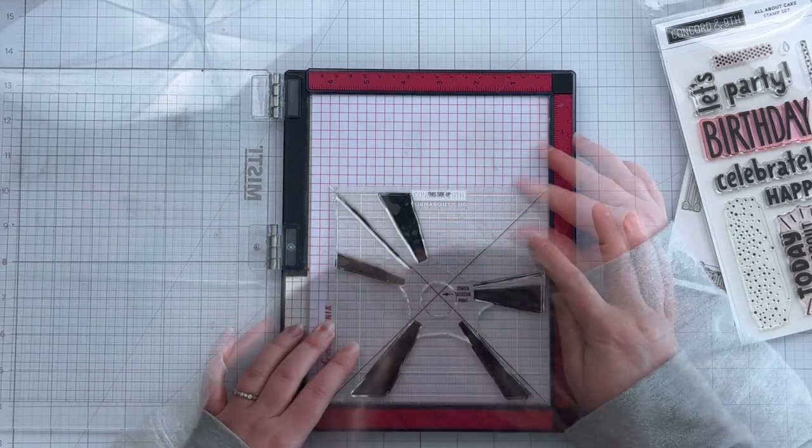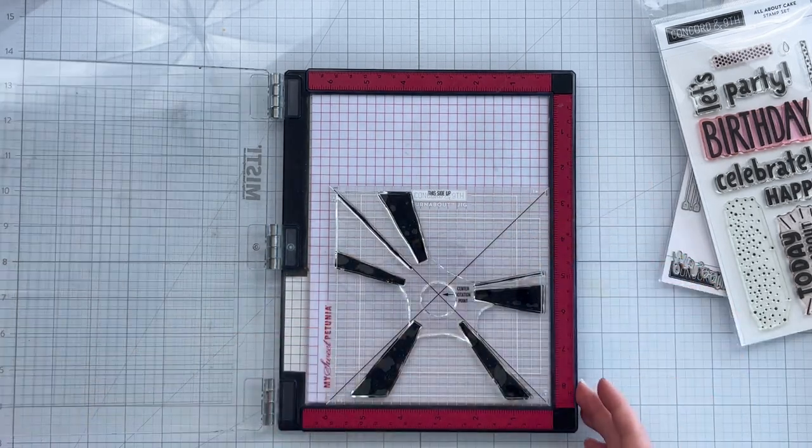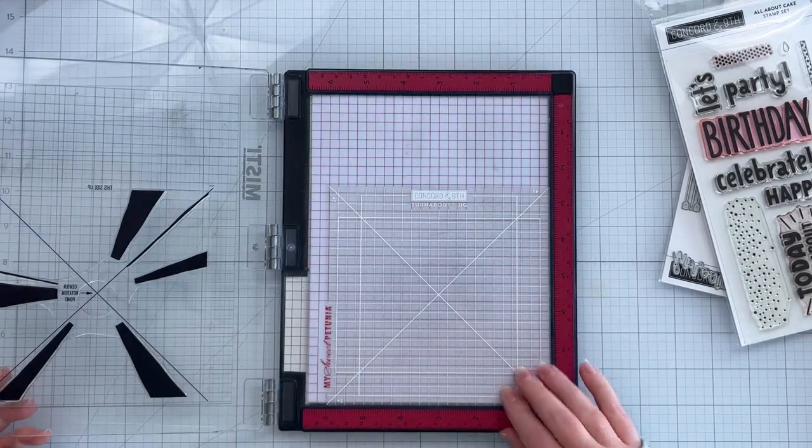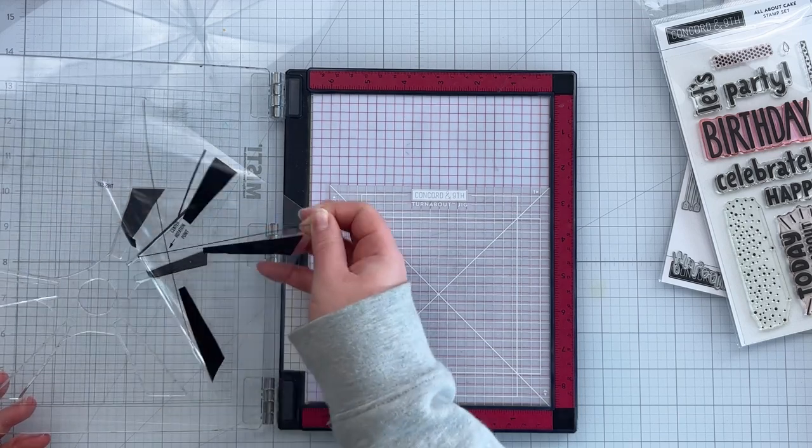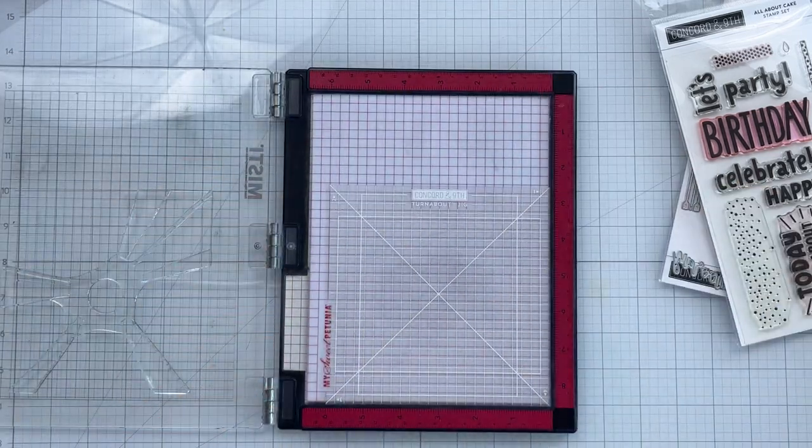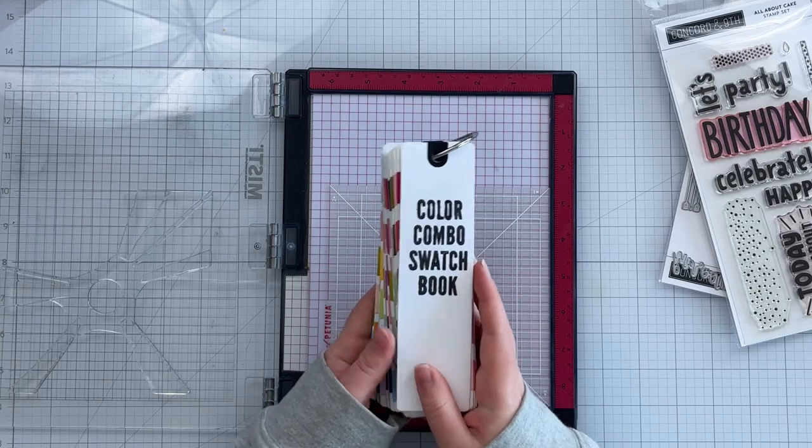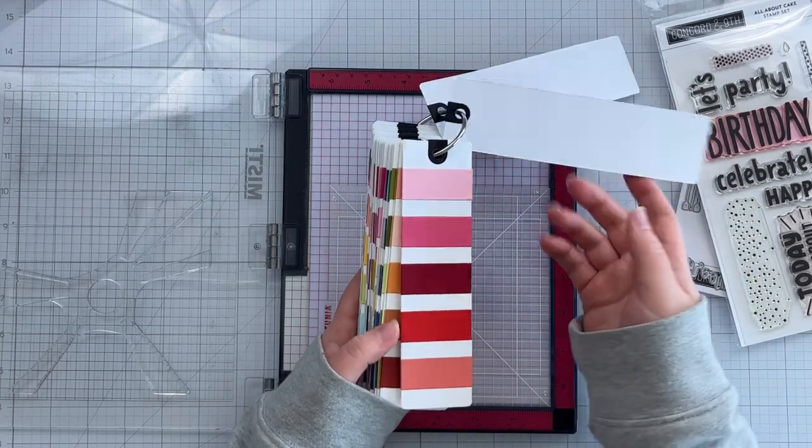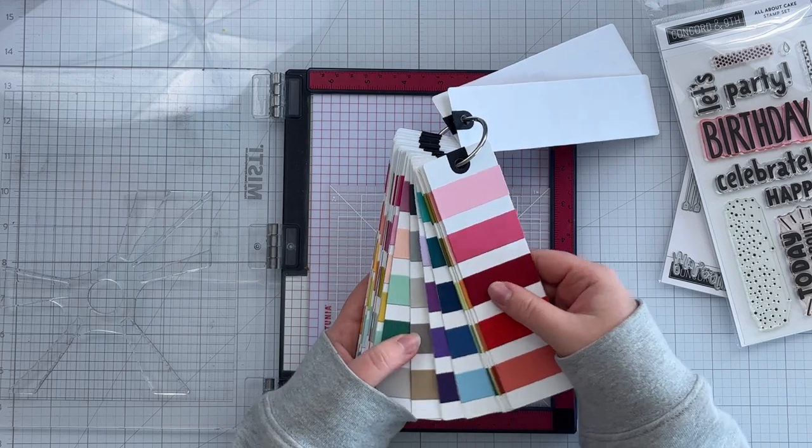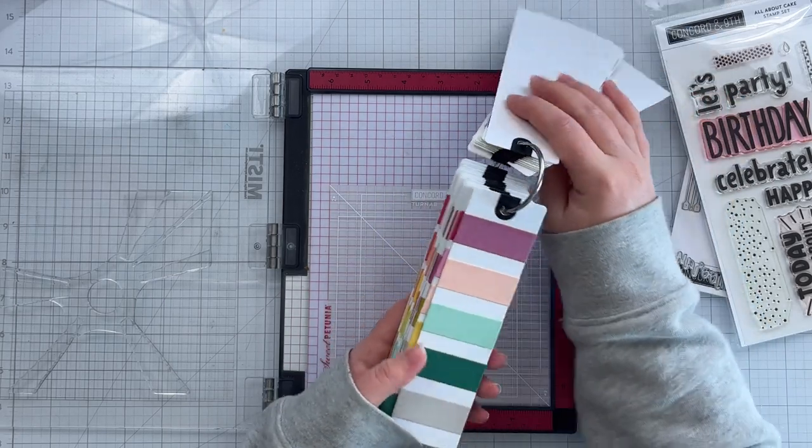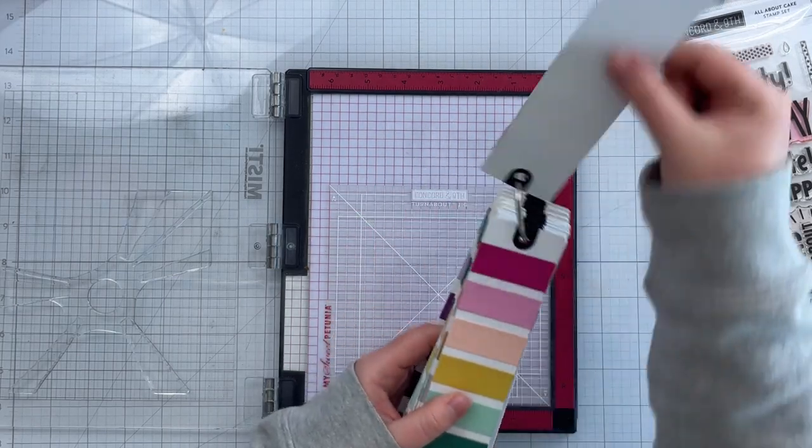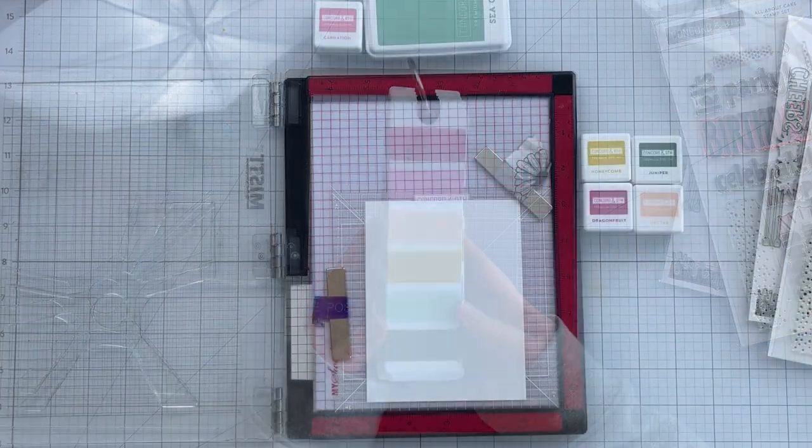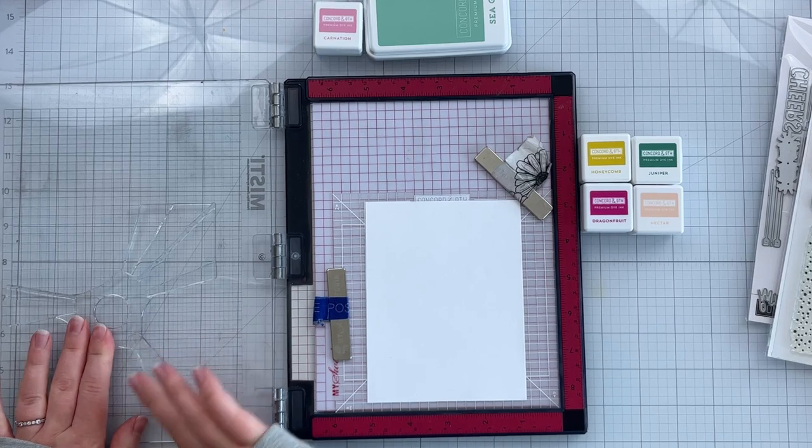So now that I have that lined up, I'm just going to close the door of my MISTI and pick up the stamp and then peel off the alignment jig and save that for later. Don't lose it. And then I have my color swatch combo book. Concord and ninth came out with this when they released their new colors and I love it. I didn't think I would love it as much as I do but making color combinations and having swatches are so fun. So I picked this palette. It's really fun. Super birthday-y.